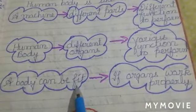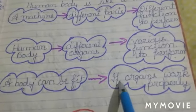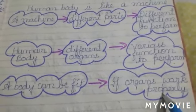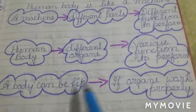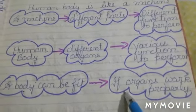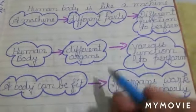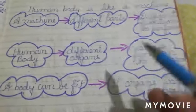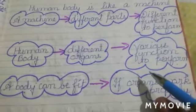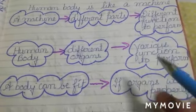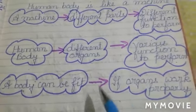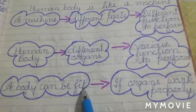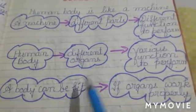In the same way, the human body also has different organs and all the organs have various functions to perform. A body can be fit if organs work properly. Your body is like a machine — if all your internal organs work properly and smoothly, then only your body will be fit.